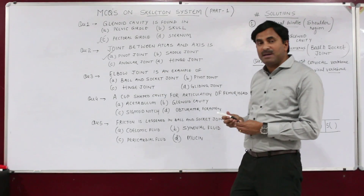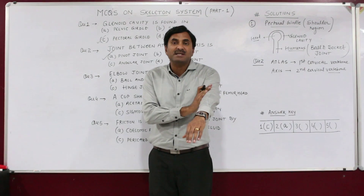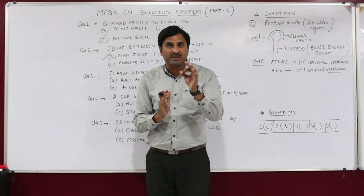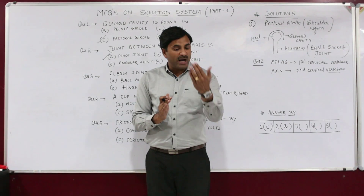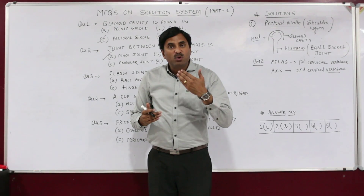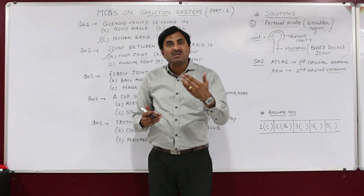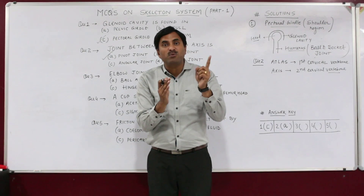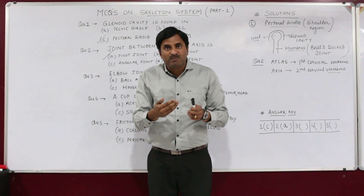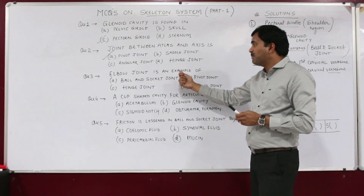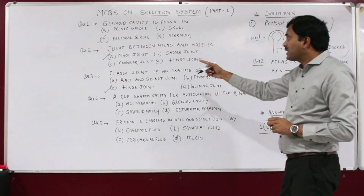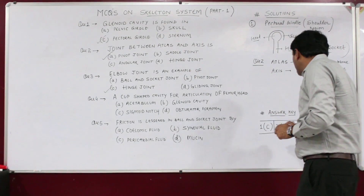Question number three: the elbow joint is an example of which type of joint? The elbow joint is found in the elbow region, and movement here can be done at an angle of 180 degrees — you can move your hand in one direction but not the opposite. This is just like a door hinge, which opens at 180 degrees on one side only. Therefore, the elbow joint is an example of a hinge joint. The answer to question number three is C.